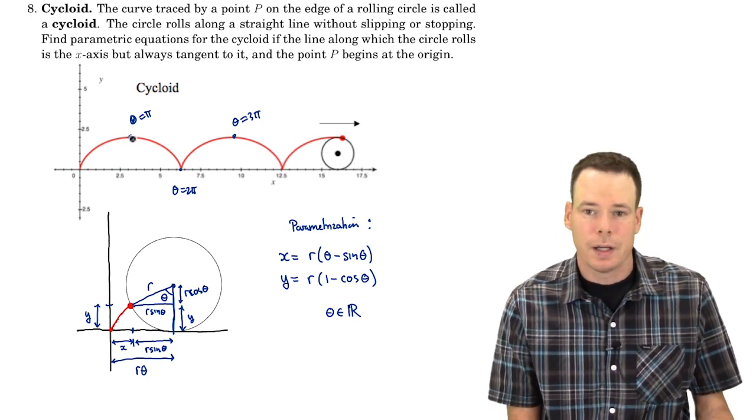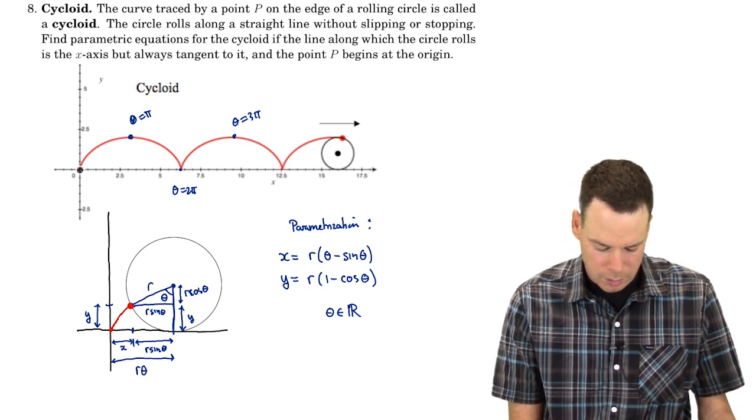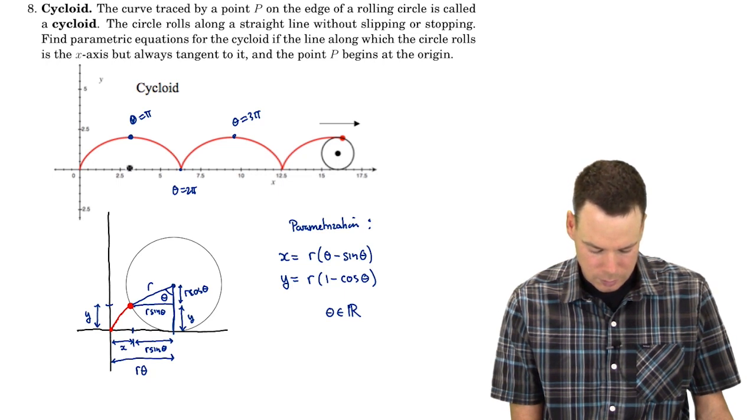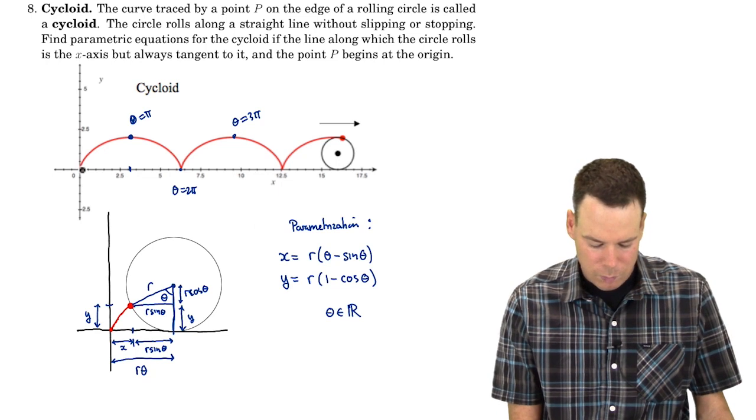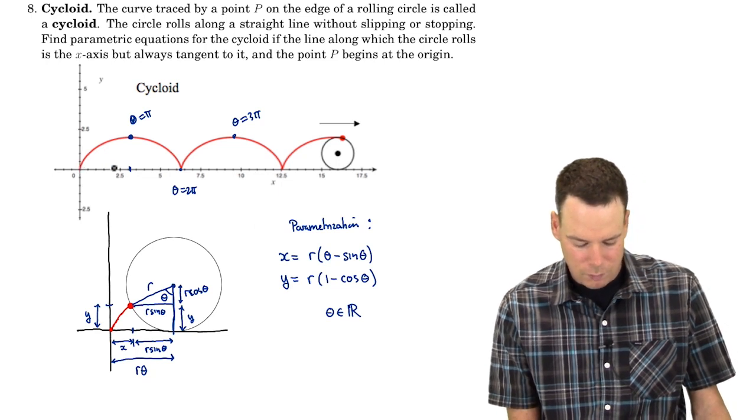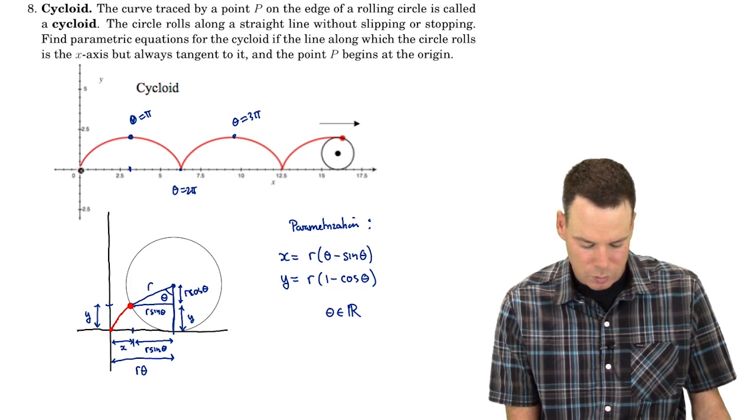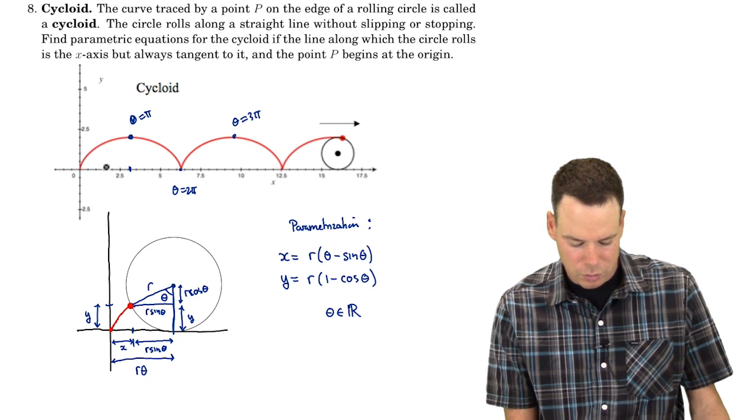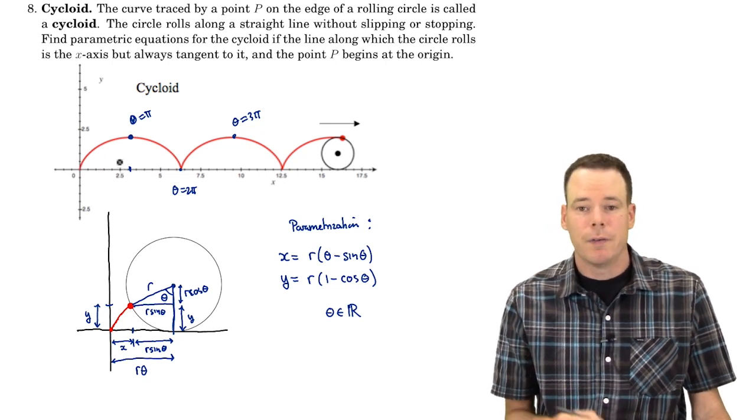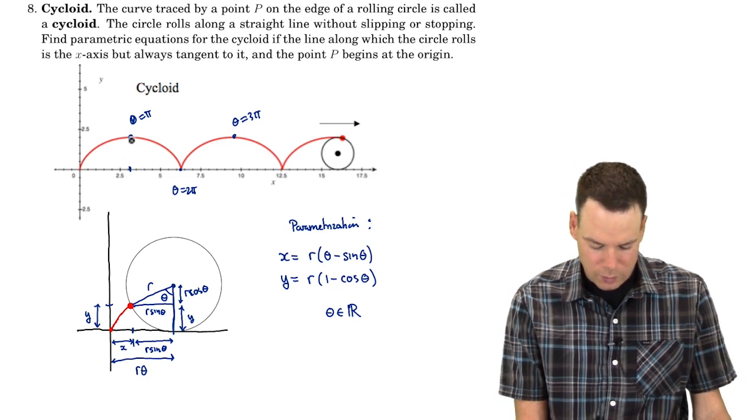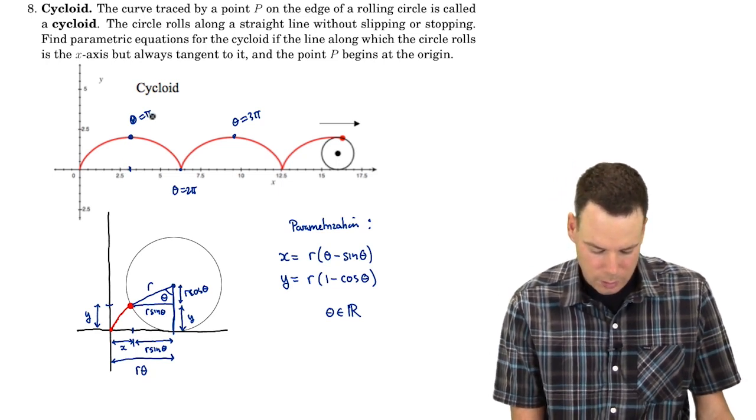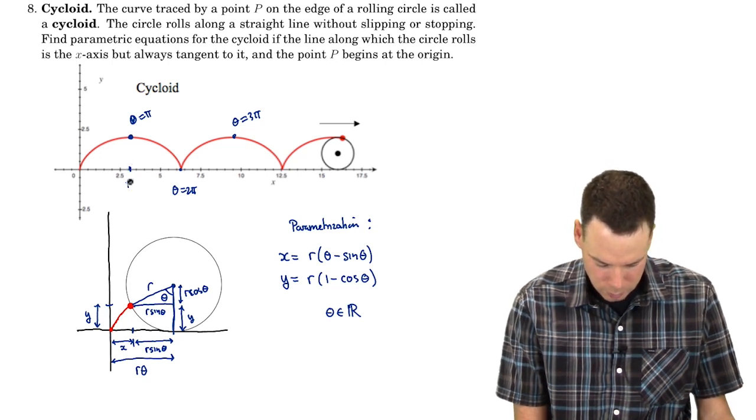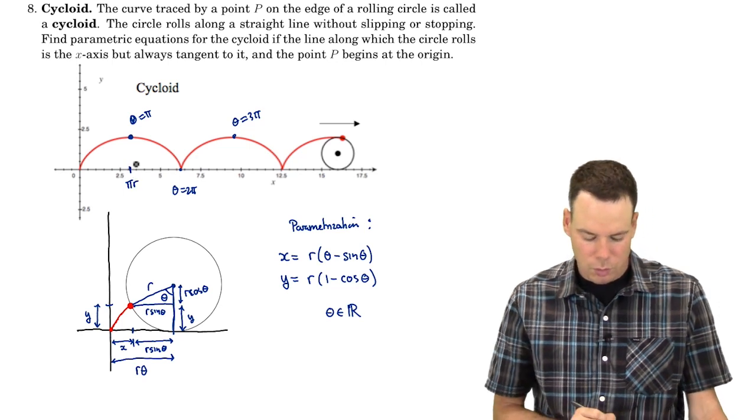Once we got there, what is our xy coordinates? Well, our x coordinate is this distance here which would have been half of the circumference of the circle. It's rolled through half of a full rotation and therefore it would have laid out a trail along the x-axis of half its circumference. So its circumference would be 2pi r. So half of it would be pi r. So this x coordinate here would be pi r.